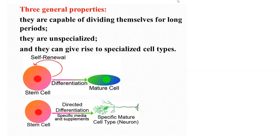You can see this picture: stem cells have the power to self-renew and can differentiate into either stem cells or specialized cells. Once this becomes a neuron, it will do its own particular function. This is the general property of stem cells.